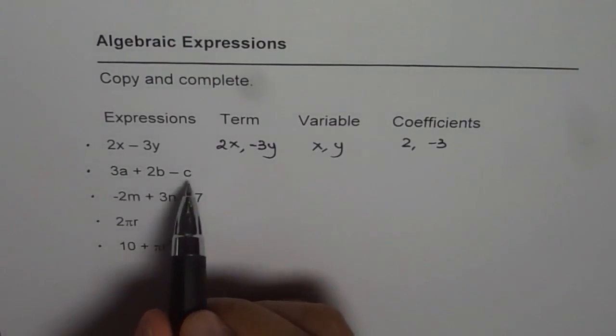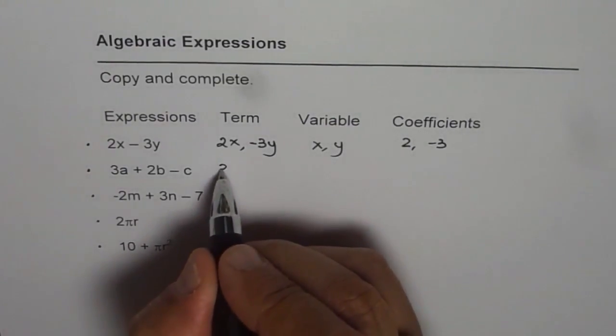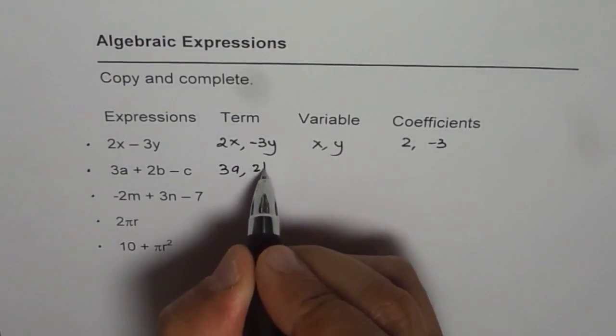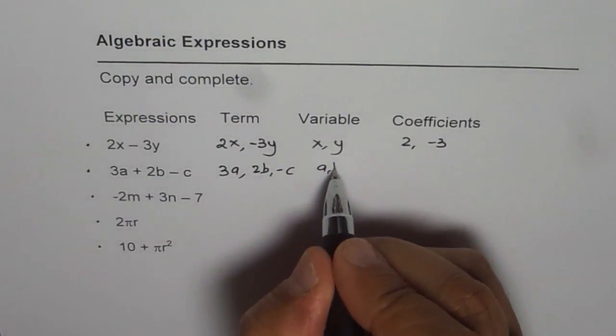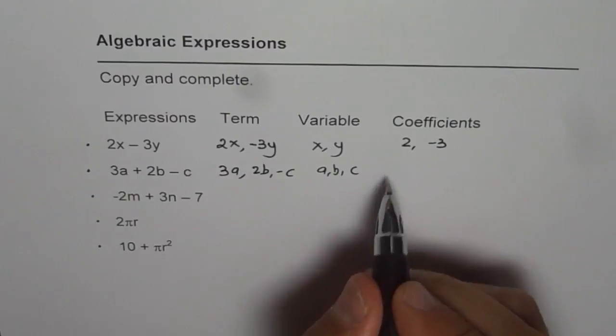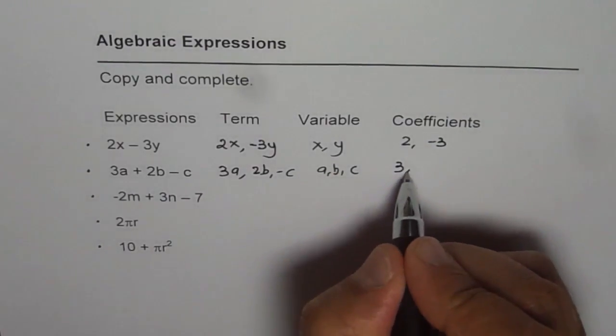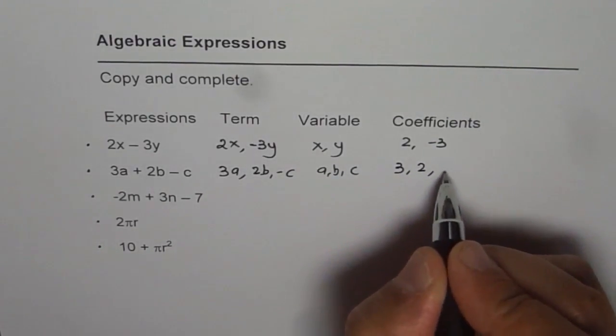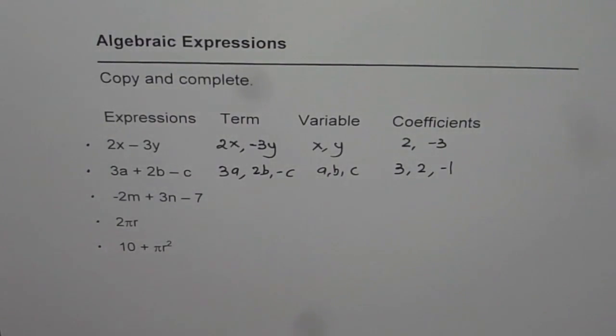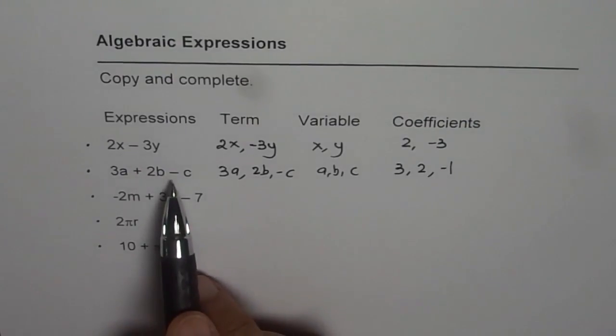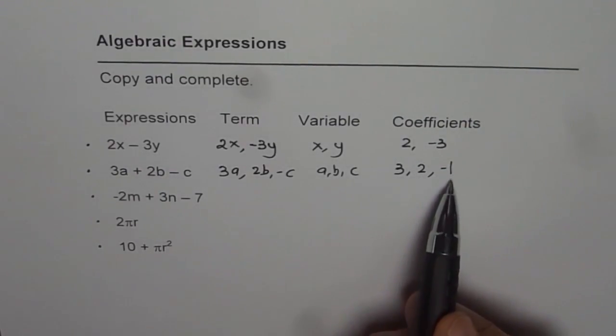So now we have three terms and the terms are 3a, 2b, and minus c. The variables are a, b, and c. Coefficients are 3 for a, 2 for b, and minus 1. Normally 1 is not written, but it is assumed, right, and the sign is negative, so minus 1 is the coefficient of c.